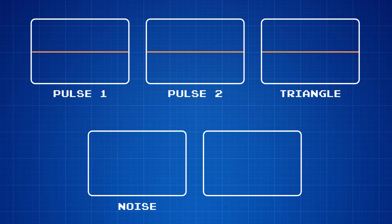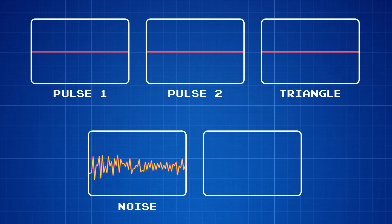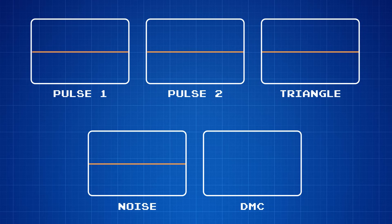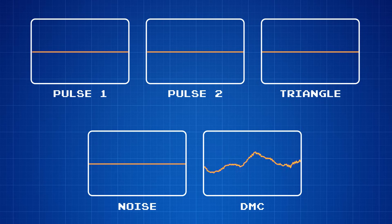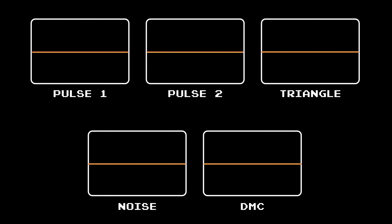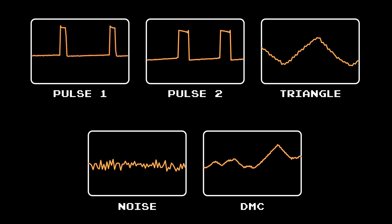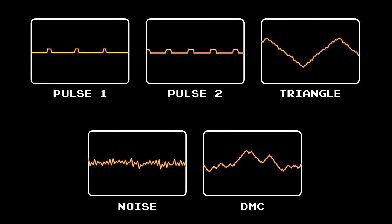The fourth channel is called the noise channel because it produces noise. This noise is seemingly random, but as we'll see in a later episode, there's actually a predictable algorithm that's driving it. And the last channel is the delta modulation channel, otherwise known as the DMC. Delta modulation is a technique that's used to digitize an analog sample, and as a result, it can play recorded audio. The real magic occurs when a game uses multiple channels to produce in-game music. By combining the square waves, the triangle wave, the noise, and digital samples, you more or less get an entire band, with a lead melody, bass, and percussion.